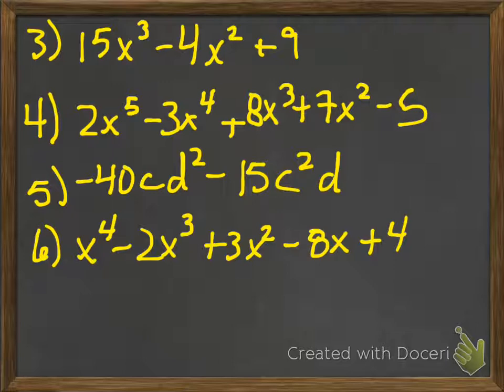Number 4, subtract — but when you subtract, you're basically changing the sign. You can go plus and then change the sign of everything in the second parentheses, and then just combine your like terms. Number 5, you're just doing distributive property. And number 6, again distributive property — torpedoes and missiles, FOIL, vertical multiplication, whatever helps you. If you have questions on those, let me know.